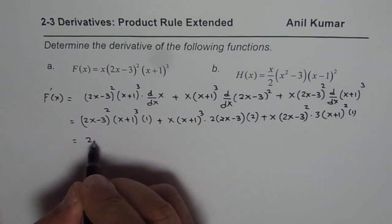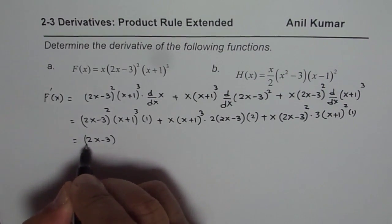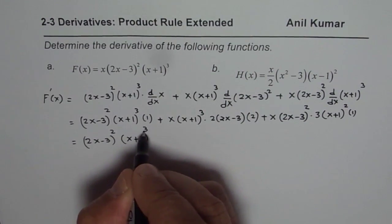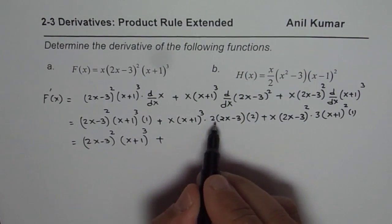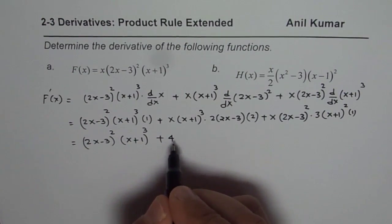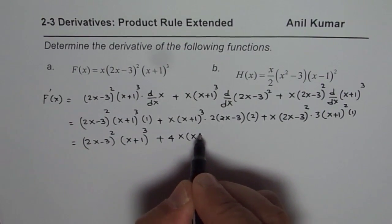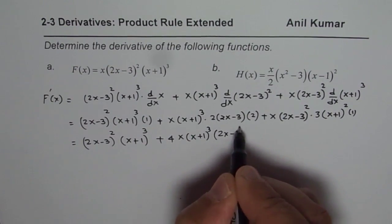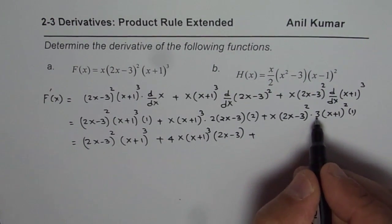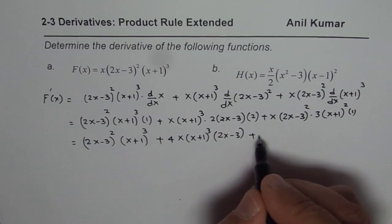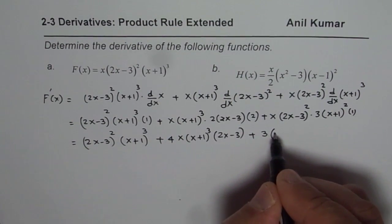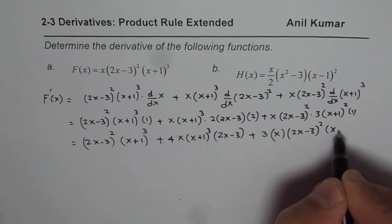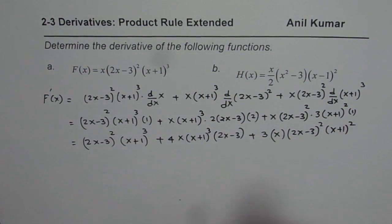At present I am not simplifying it completely, just writing the extended version. So this simplifies to 4 times x times (x plus 1) cubed times (2x minus 3), plus 3 times x times (2x minus 3) squared times (x plus 1) squared.